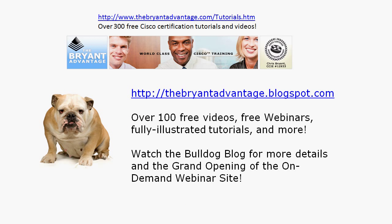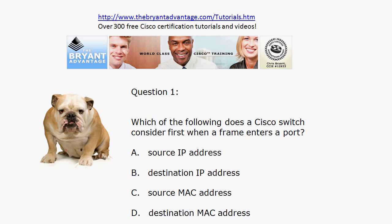Let's jump back to question one: which of the following does the Cisco switch consider first? When a frame comes into a port, it's logical to think it's going to look at the destination MAC address, because we're dealing with switches and frames and MAC addresses. But A and B are incorrect. While the switch will eventually look at the destination MAC address, the switch will first look at the source MAC address.